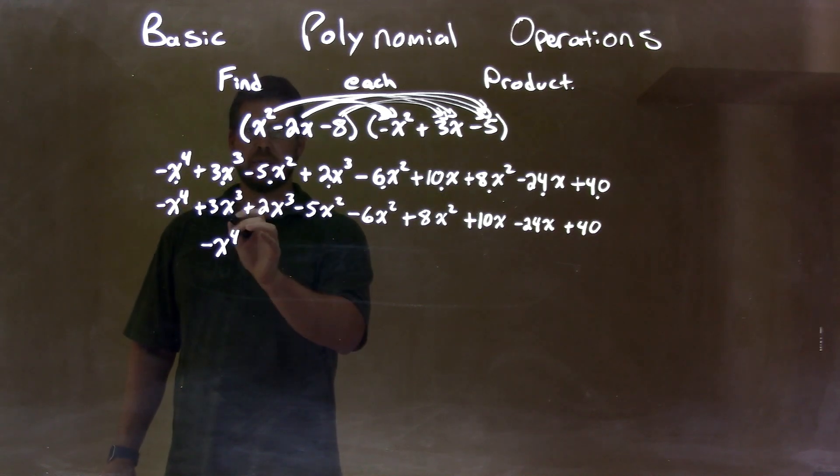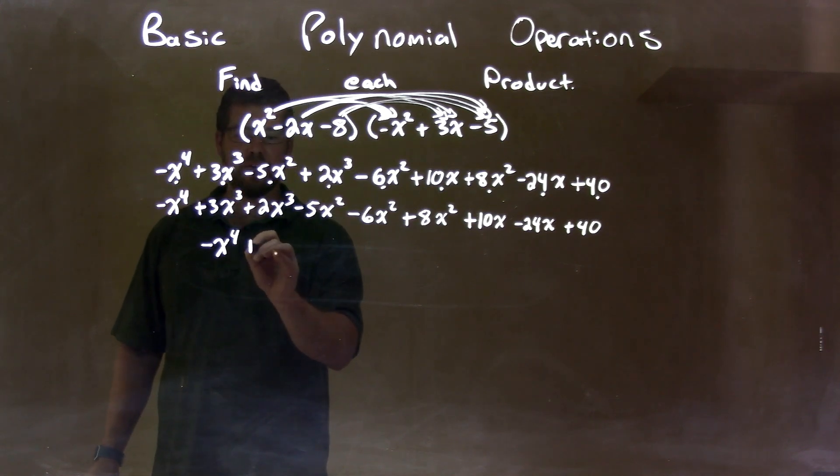And, that's going to be fairly simple. 3x to the third and 2x to the third power. That's a 5. 5x to the third power.